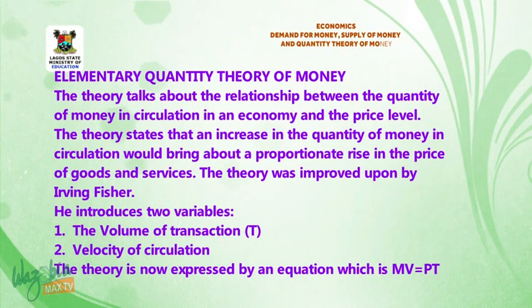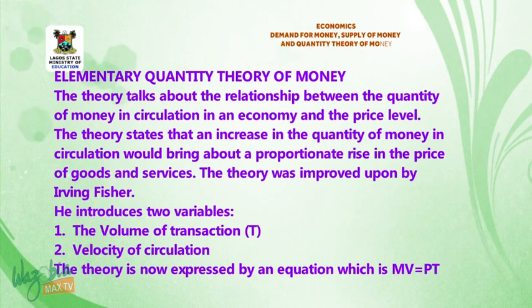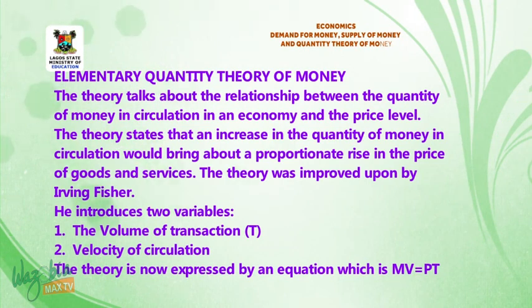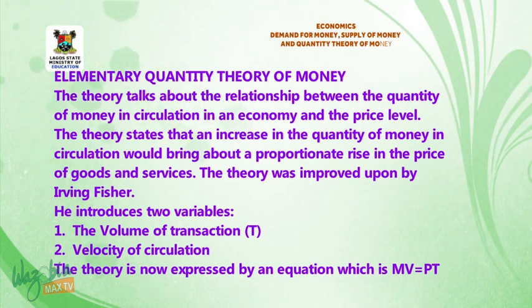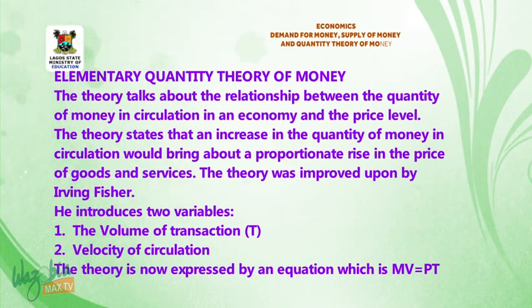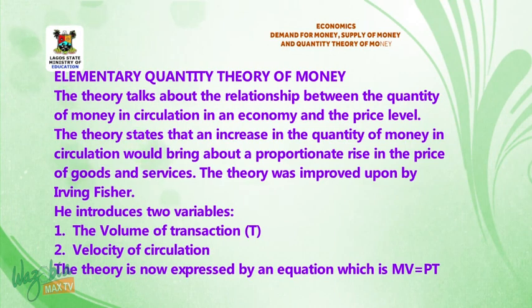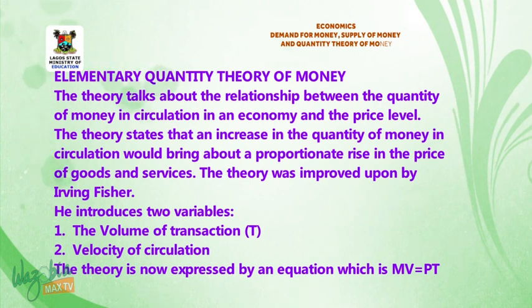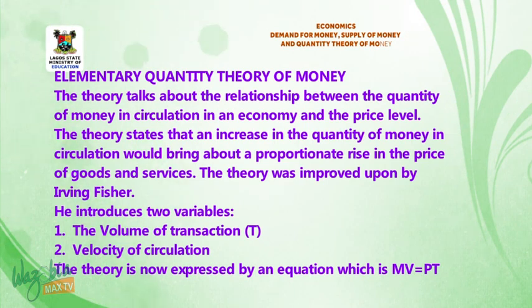So we want to look at an elementary quantity theory of money. The theory talks about the relationship between the quantity of money in circulation in an economy and the price level. The theory says that an increase in the quantity of money in circulation will bring about a proportionate rise in the price of goods and services. The theory was improved upon by Irving Fisher, who introduced two variables.